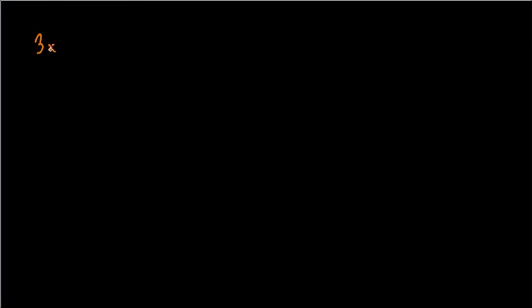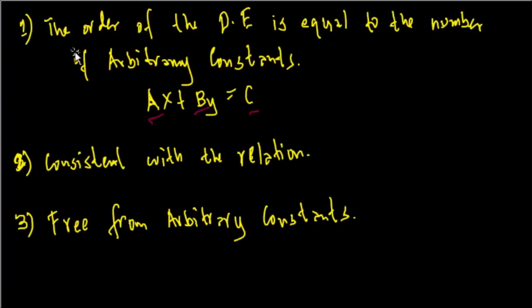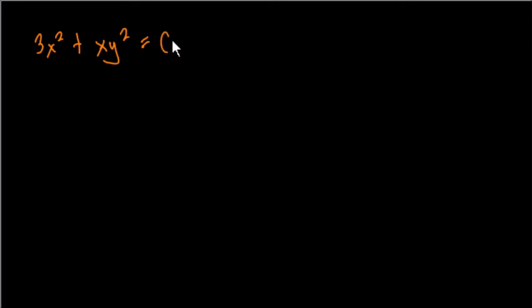Let's work through a simple example. Given the equation 3x squared plus xy squared equals C, we need to find the equivalent differential equation by eliminating the arbitrary constant. Inspecting the equation, there is only one arbitrary constant C, so by rule one, the order of the differential equation must be one. We differentiate the equation once.